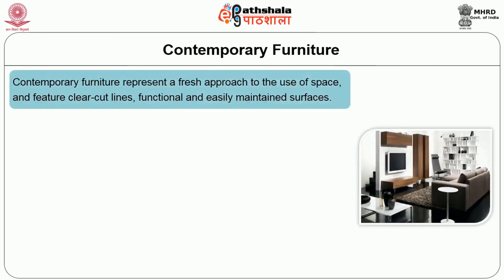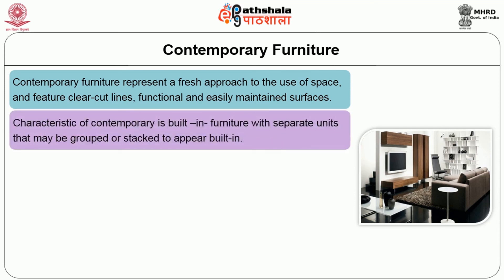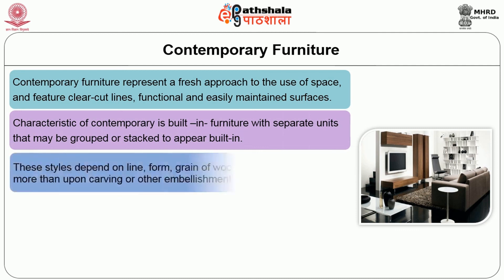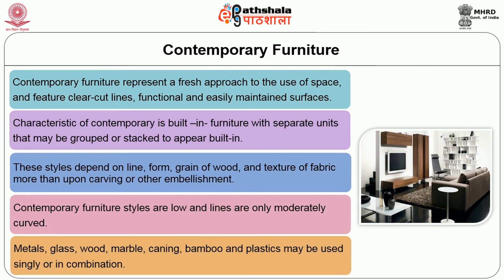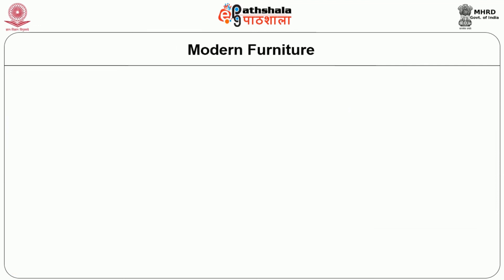Contemporary style: contemporary furniture represents a fresh approach to the use of space and features clear-cut lines and functional, easily maintained surfaces. A characteristic of contemporary furniture is built-in furniture with separate units that may be grouped or stacked to appear built-in. These styles depend on line, form, grain of wood, and texture of fabric more than upon carving or other embellishment. Contemporary furniture styles are low, and lines are only moderately curved. Materials such as metals, glass, wood, marble, caning, bamboo, and plastics may be used singly or in combination.